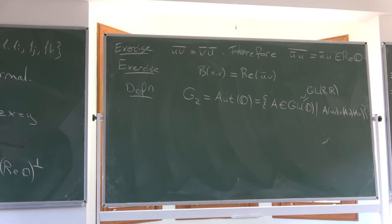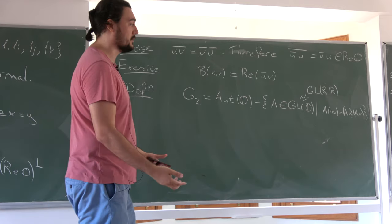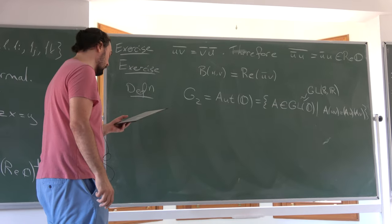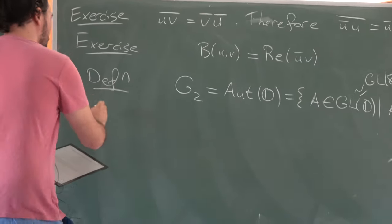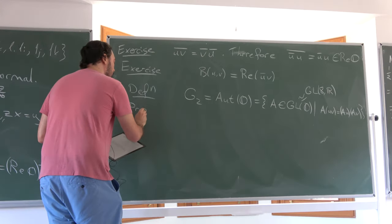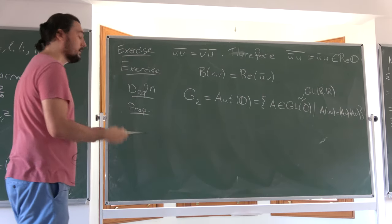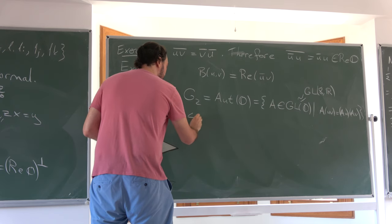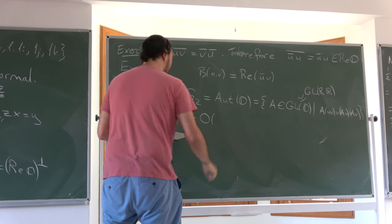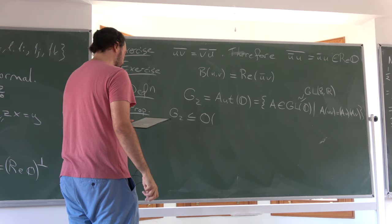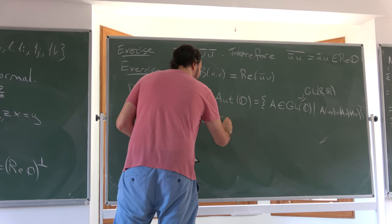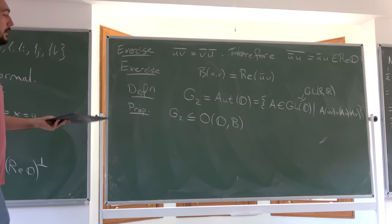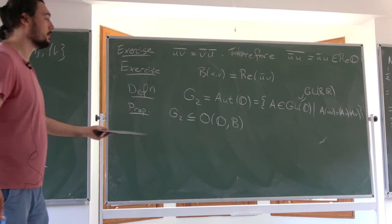Proof: The real part of UV equals B(Ū, V). Since U is imaginary, Ū = −U, so this is −B(U,V) = 0 by perpendicularity. Hence UV is imaginary. The second part — that UV is perpendicular to both U and V — follows from the first lemma: multiplication by a unit octonian is an orthogonal transformation, so the orthonormality of {1, U, V} implies {U·U, U·V} is orthonormal.